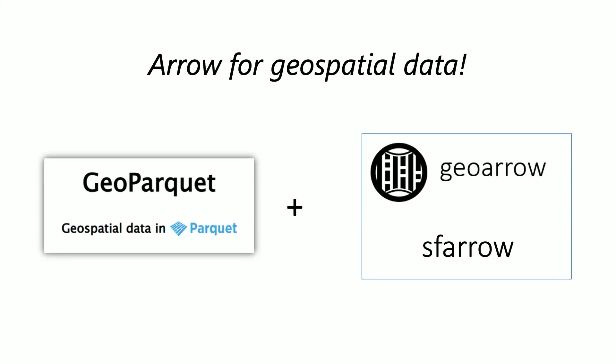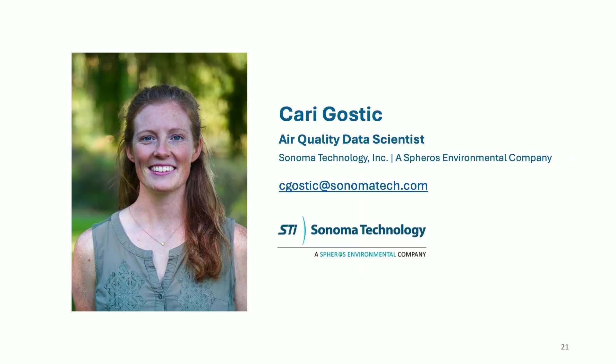The geospatial suite for Arrow is relatively new — within the past few years — so this is a PSA that it exists and it's really powerful and impressive. I actually also found it very easy to use. I've been known as a bit of a ding dong, and I didn't really have much trouble learning it. So next time you find yourself loading geospatial data into R, I really suggest you give it a try. Thank you for listening.